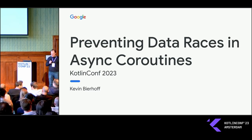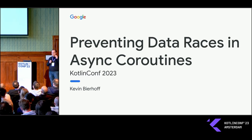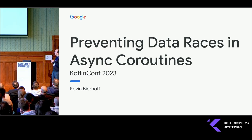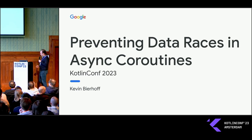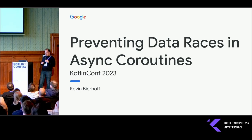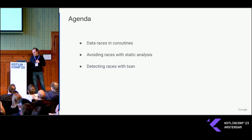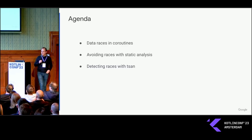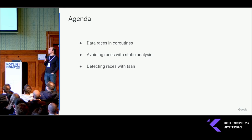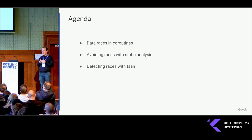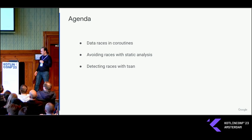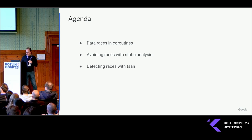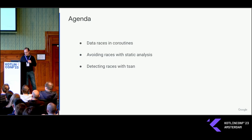I'm Kevin. I lead the team that supports Kotlin at Google, meaning our own use of Kotlin in Android apps and on JVMs. I'm going to talk about data races in coroutines, which is maybe a bit surprising. I'm going to show a little bit of how that can happen first, and sort of two techniques that we've worked with to try to prevent them: static analysis and something called TSAN that I'll show a little bit later.